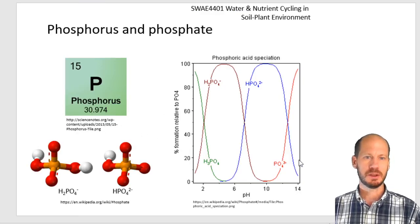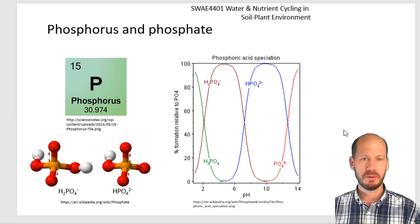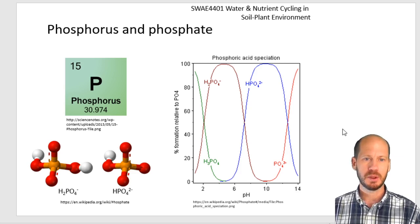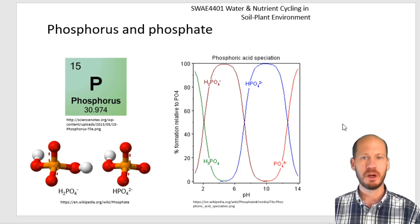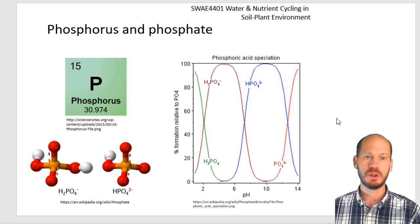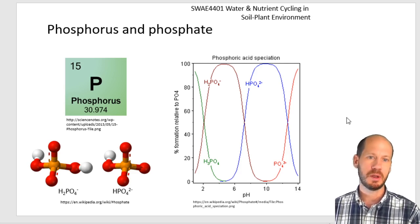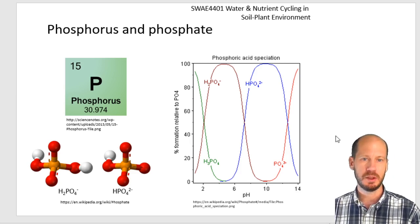In short, phosphorus is atomic mass 31, number 15 on the periodic table. Although we have allotropic forms of phosphorus, what we usually find in natural environments is phosphate ions, phosphate molecules, or organic phosphorus — which are in general the phosphate making esteric bonds with carbon molecules in the organic matter.